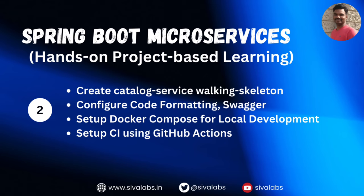We have talked about the bookstore application that we are going to build, discussed microservices architecture and how it is different from monolithic architecture, and the pros and cons of each approach. So finally we are going to start building our first microservice - the catalog service. In this video we are going to set up our catalog service and configure everything required for building our microservice.